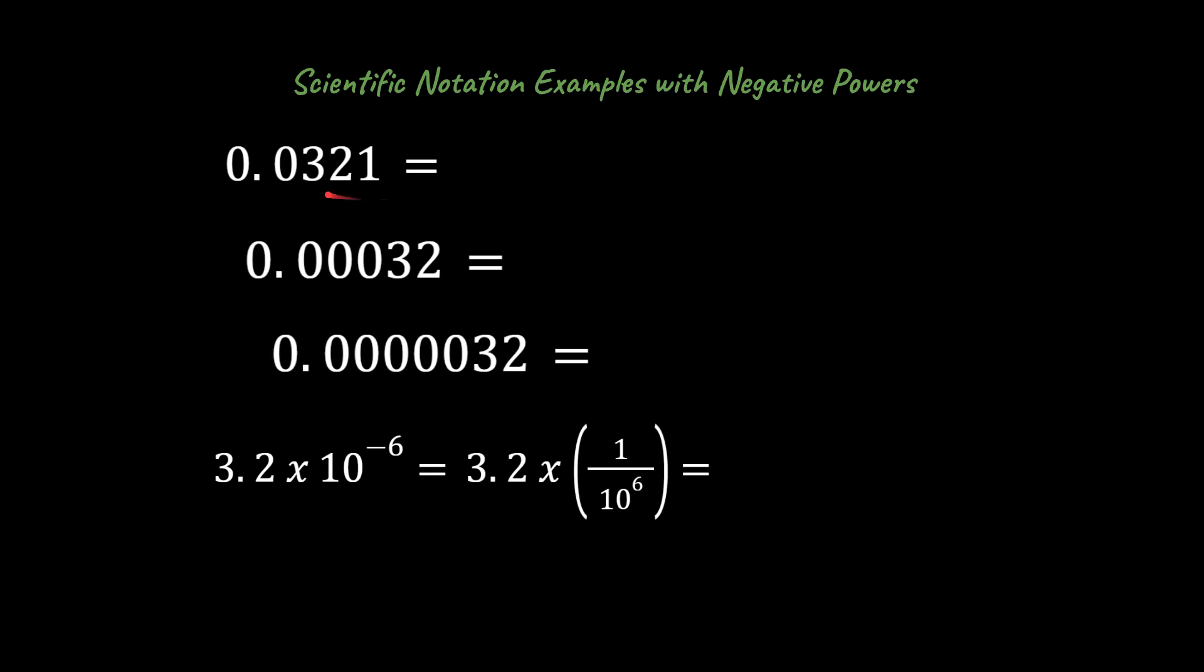0.0321, is only significant with the 3, the 2, and the 1. And so what we want to do is write 3.21 times 10 to the negative 2. So that would be moving the decimal place in the opposite direction, so to speak.